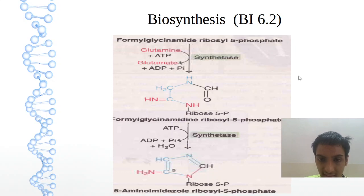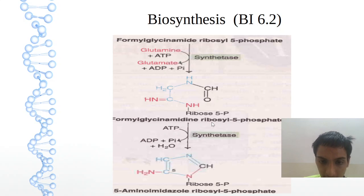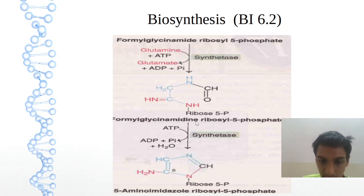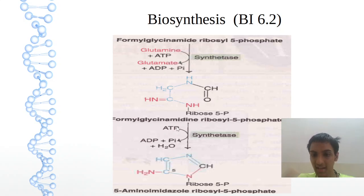Then on synthetase, just two letters will be added: IN. So amidine will be formed. Then on synthetase, 5-amino imidazole is formed — in place of formyl glycinamide, 5-amino imidazole will be there.